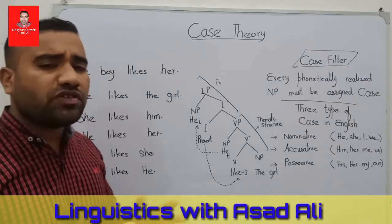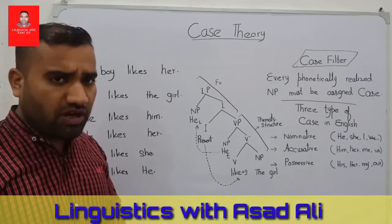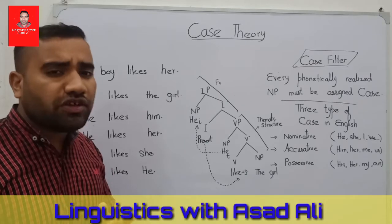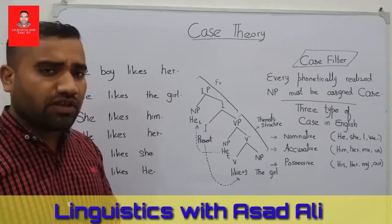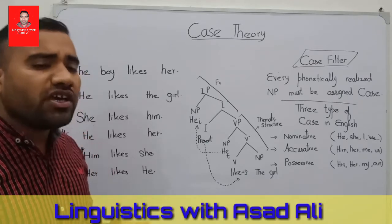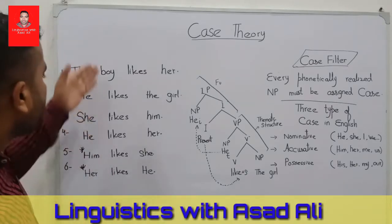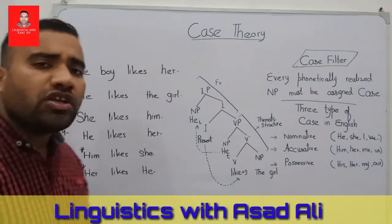We can notice that sentences number five and six are ungrammatical. What is the reason behind this ungrammaticality, and why are the other sentences grammatical?